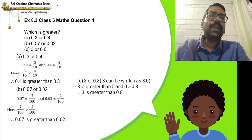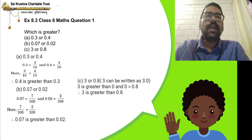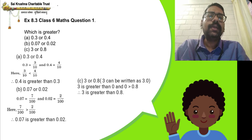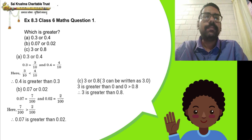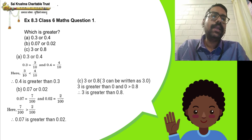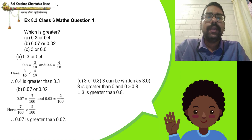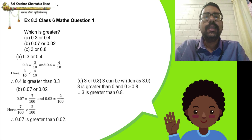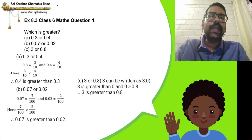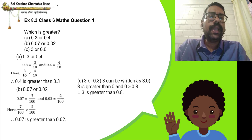You can also write 0.07 as 7/100 and 0.02 as 2/100. Since 100 has two zeros, you need two digits after the decimal point. Comparing these like fractions, 7 is greater than 2, therefore 7/100 is greater than 2/100, confirming 0.07 is greater than 0.02.